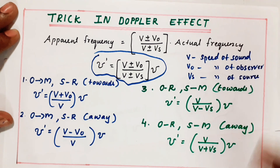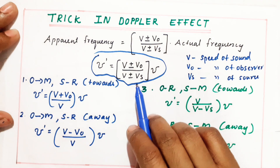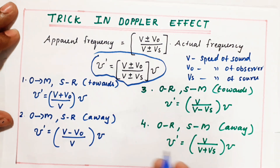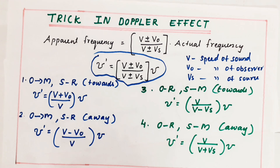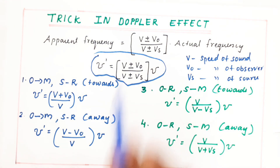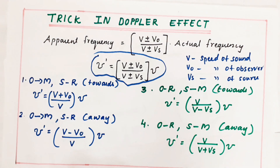Now I will give a trick. You have to remember this equation: V plus or minus V_O by V plus or minus V_S. Remember that the observer term is always in the numerator. So the source term will be in the denominator. That is the thing you have to remember.